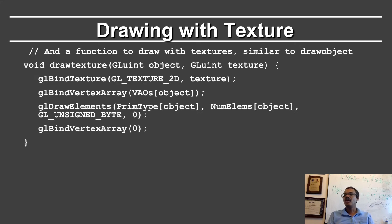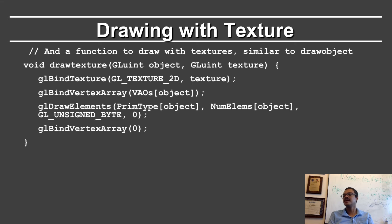Let's now talk about drawing with texture. We add a function drawWithTexture, which will be used for the floor and is similar to drawObject, except now it takes as input the texture. We first bind GL_TEXTURE_2D to the texture, bind the vertex array for the object, and then just draw it. The only thing that's different is that you're binding this texture corresponding to the texture variable.